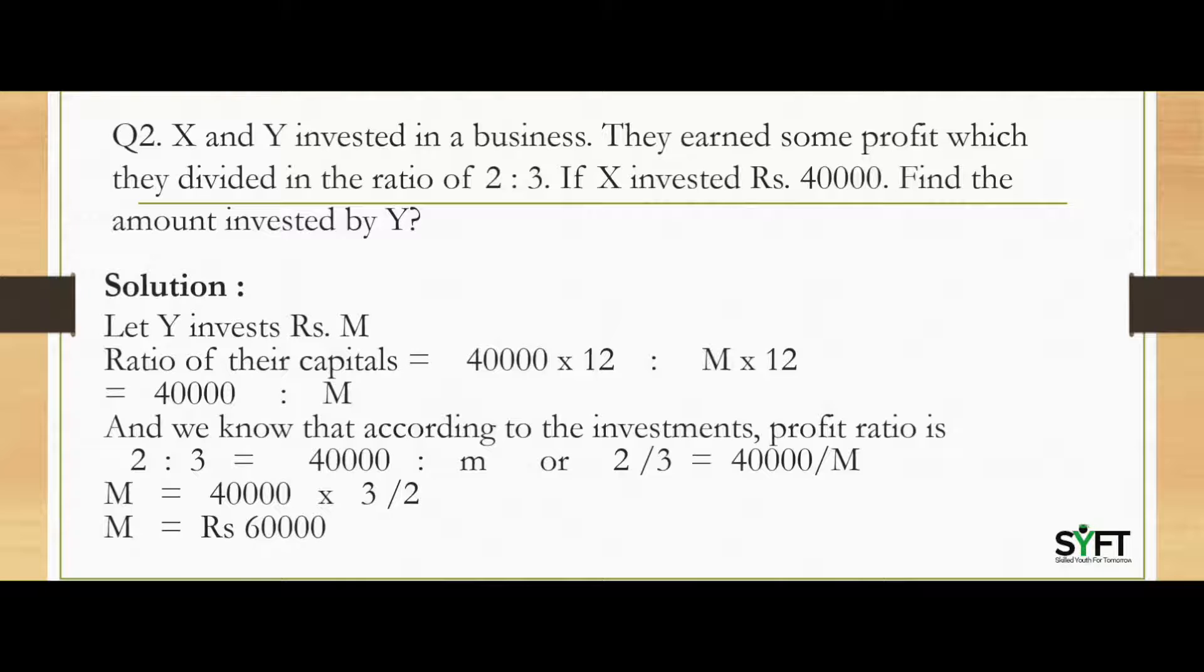So 40,000 into 12 is to M into 12. After solving this we get the capital ratio 40,000 is to M. And we know that according to the investments, profit ratio is 2 is to 3.